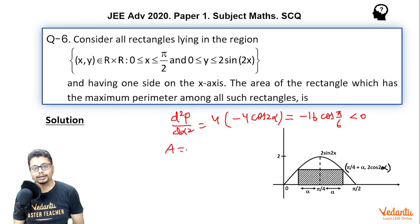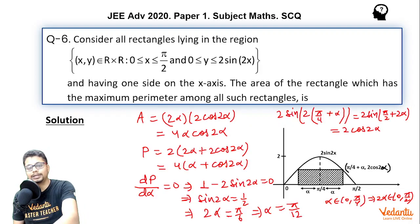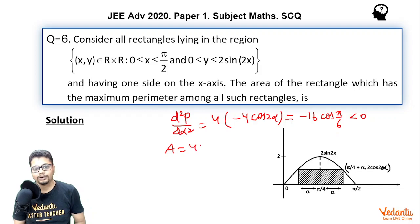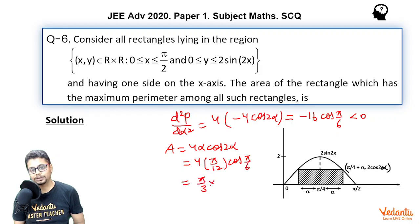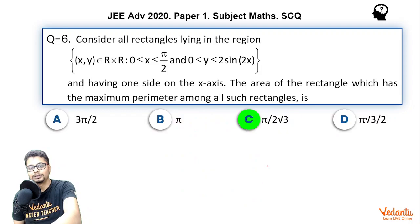Now what about the area? Area is 4α cos(2α). So when α is π/12 what about this area? It becomes 4 times π/12 cos(π/6). So basically it becomes π/3 times √3/2. So basically it becomes π/(2√3). And this is exactly what we wanted, area of the rectangle which has the maximum perimeter. So my answer becomes π/(2√3).